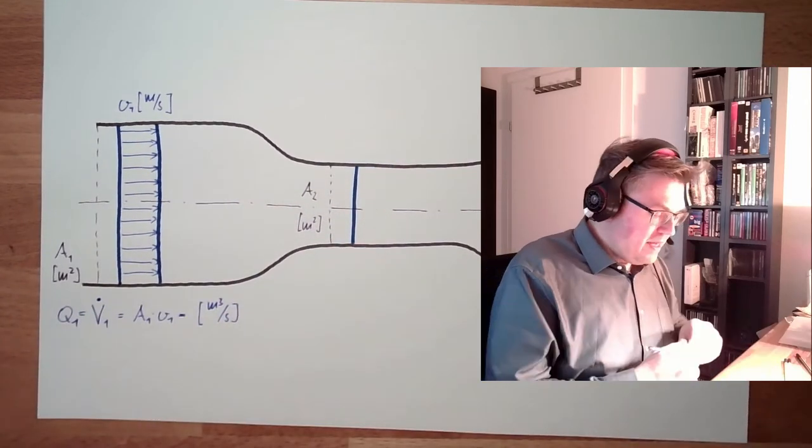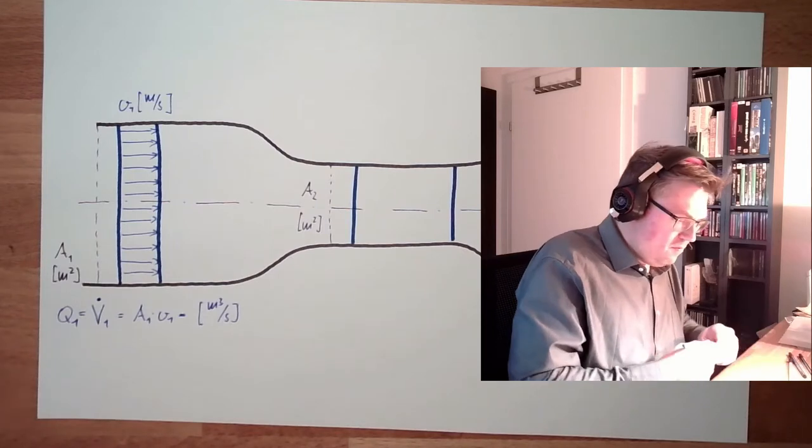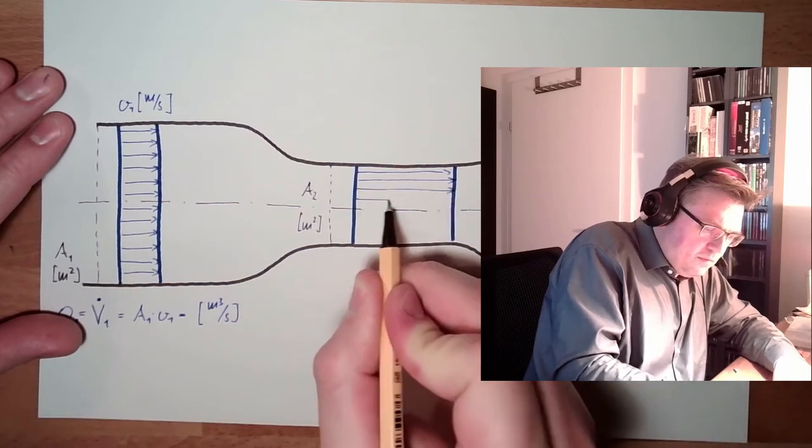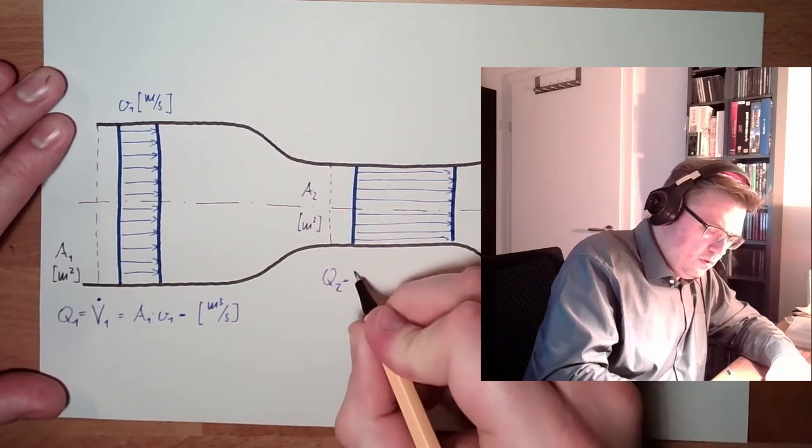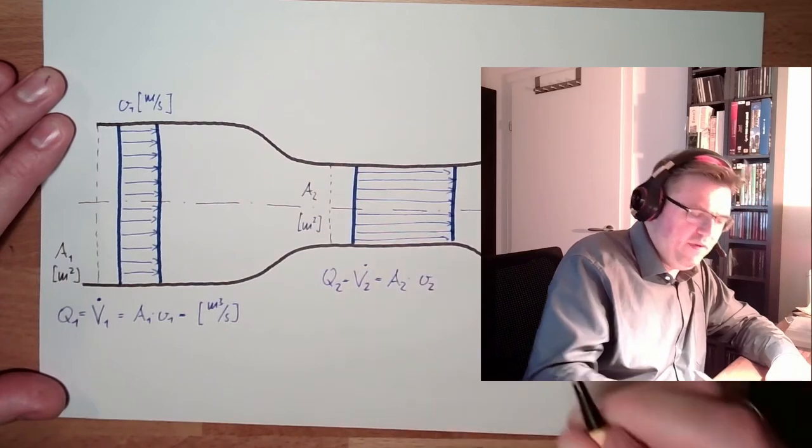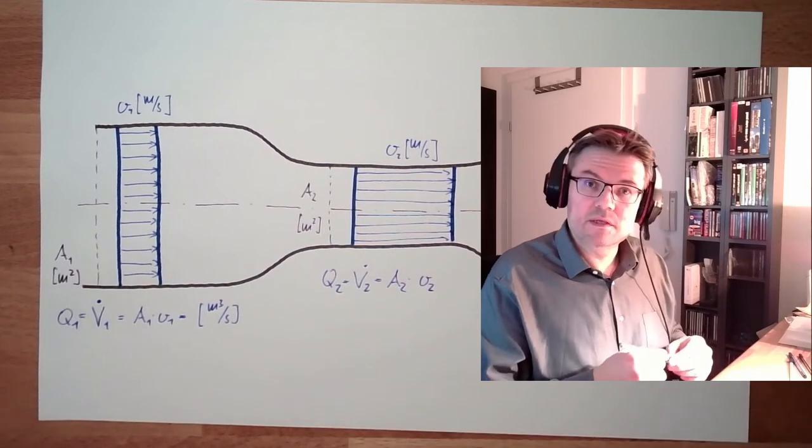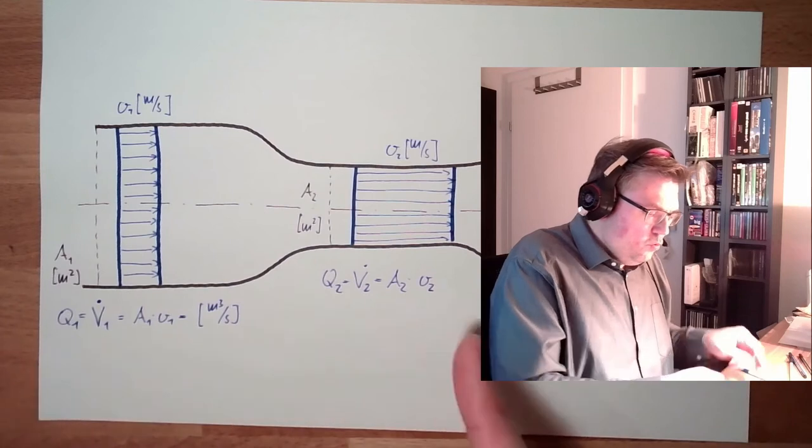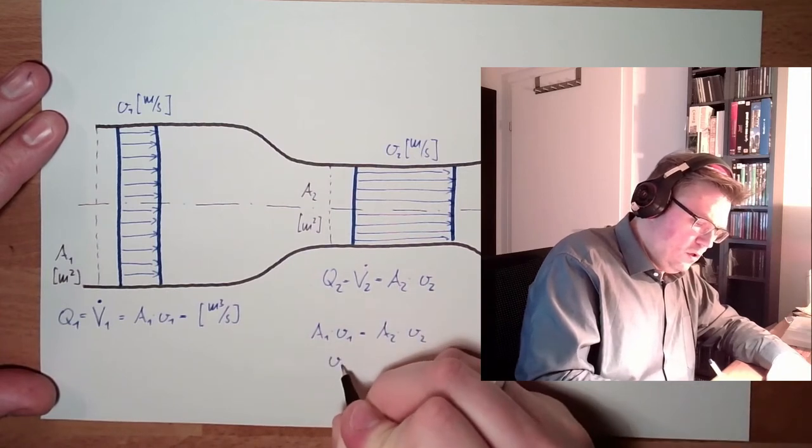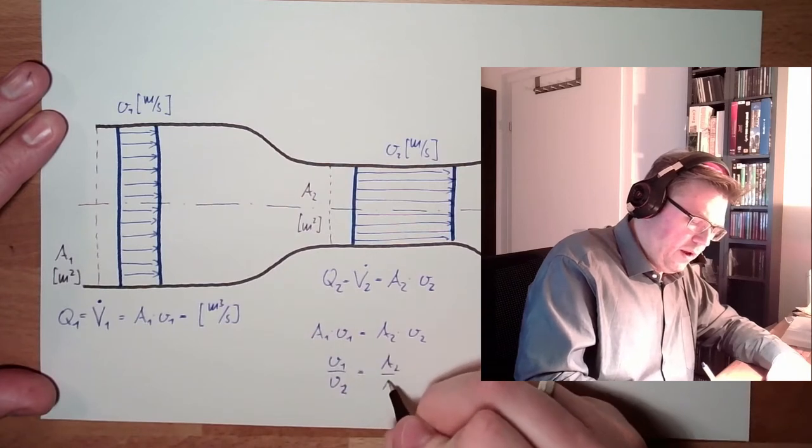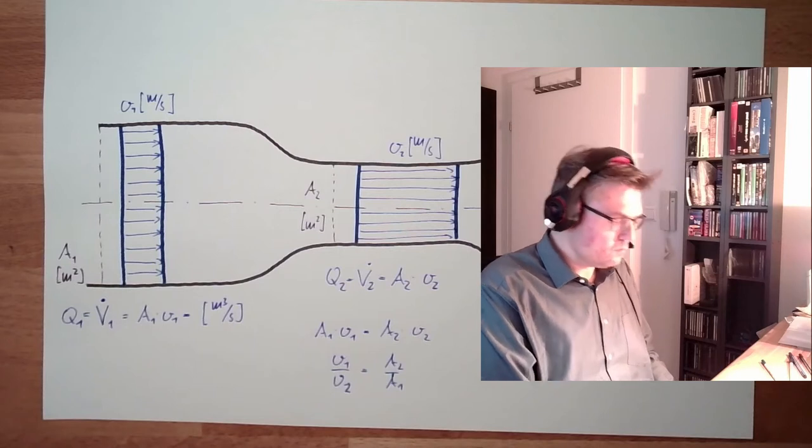So we would need the same volume here, but we have less area. So in the same time we moved a little bit further, so that this volume, this moved volume here, is exactly the same. So here we have Q2, V2, this is area 2 multiplied by V2. So we have a second velocity here. Now we said if these two must be equal, this means A1 multiplied by V1 is A2 multiplied by V2. This means V1 divided by V2 is A2 divided by A1. That's the continuity equation. Should be equal.